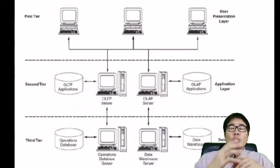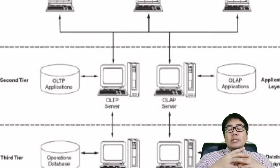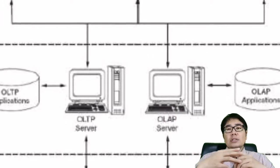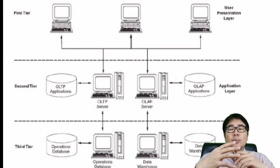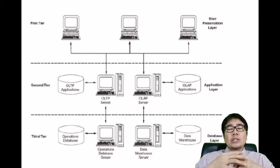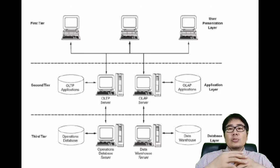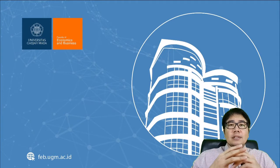The application inside an ERP system is usually separated into two types: OLTP (online transaction processing) and OLAP (online analytical processing). OLTP supports daily transactional operations inside the company, while OLAP is used by middle management to perform analytics on data gathered inside the ERP system.